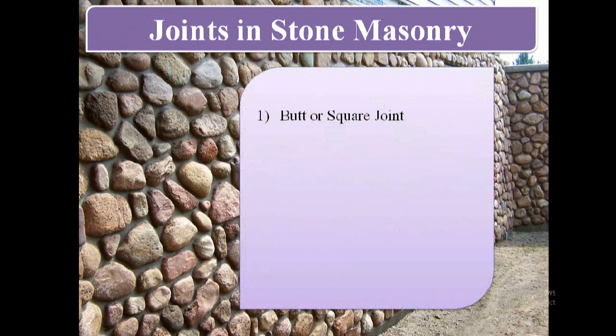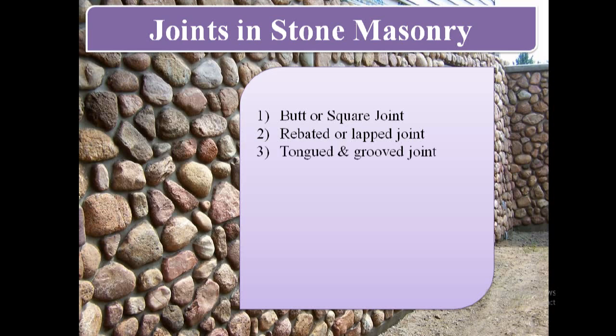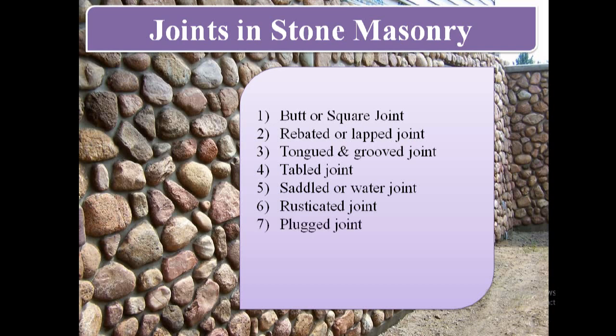First one is butt or square joint. Second one is rebated or lap joint. Third one is tongue and groove joint. Fourth one is tabled joint. Fifth one is saddle or otter joint. Sixth one is rusticated joint. Seventh one is plugged joint. Eighth one is dowel joint, and ninth one is cramped joint. Now we will see one by one in detail.